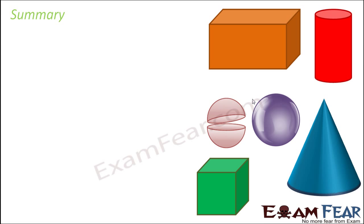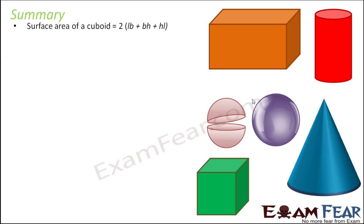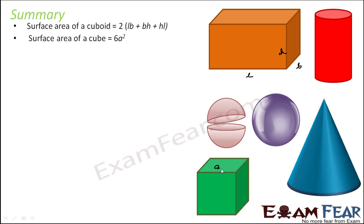Let's do a quick recap. The surface area of a cuboid is 2(lb + bh + hl). The surface area of a cube is 6a², where a is the side length of the cube. Here, l is length, b is breadth, and h is height for the cuboid; the cube has all sides of length a.